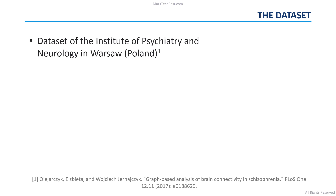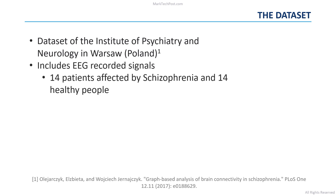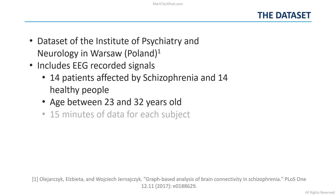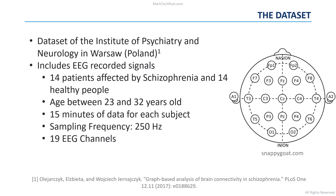The researchers used the dataset of the Institute of Psychiatry and Neurology in Warsaw, Poland. This dataset includes recorded EEG signals from 40 male and female patients affected by schizophrenia and 14 healthy people, with ages spanning between 23 and 32 years old. For each subject, the dataset includes 15 minutes of EEG data recorded during a eyes-closed resting state condition, acquired with a sampling frequency of 250 Hz using 19 channels.